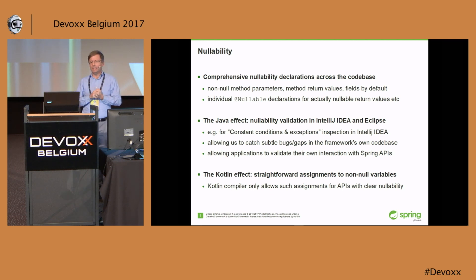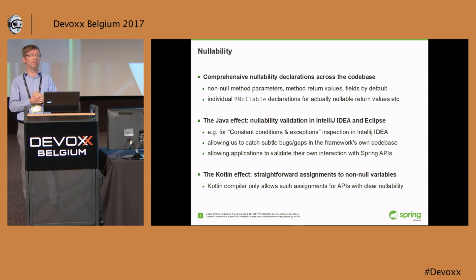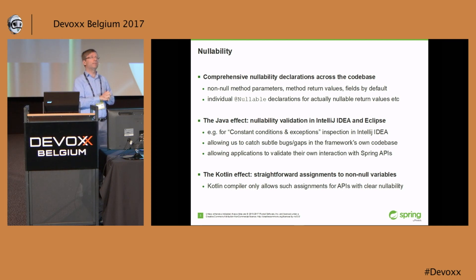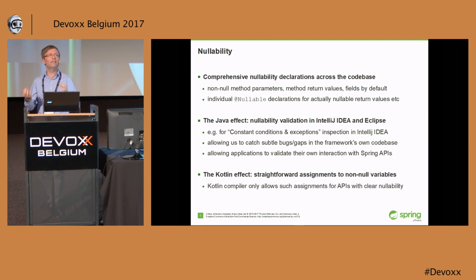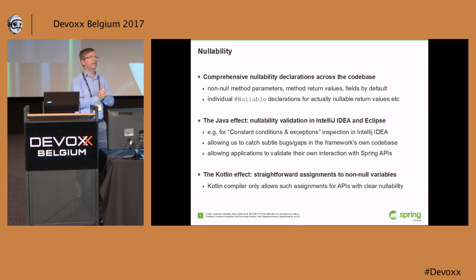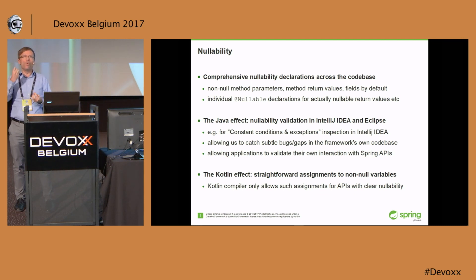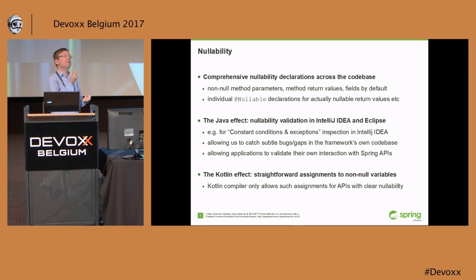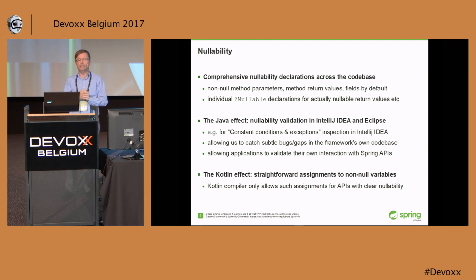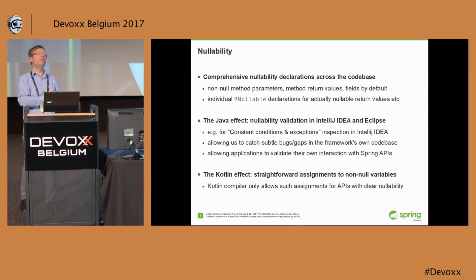We had the topic loosely on our radar for quite a while, but we have a strong driver now, and that driver is actually Kotlin — since there was a Kotlin session in this room right before. In the Kotlin language, nullability and the assignment to a non-null declared variable is a pretty important fundamental mechanism. If from a Kotlin perspective you interact with a Java API, it is enormously helpful if the Java API has explicitly declared nullability — if it explicitly says this can be null, this cannot be null — while the Kotlin compiler makes assumptions about what you can do with the outcome of a Java method call in Kotlin code.